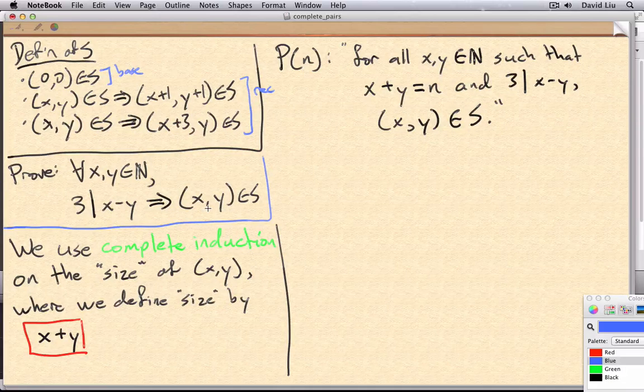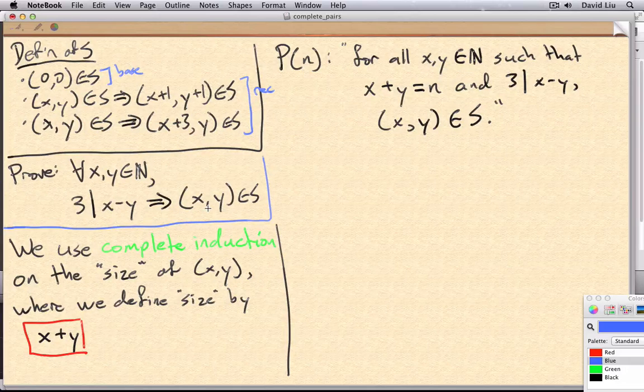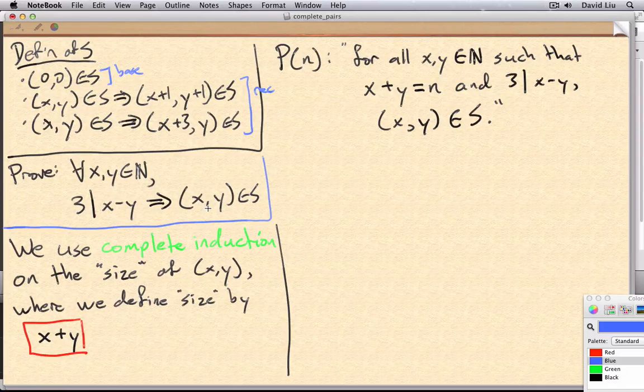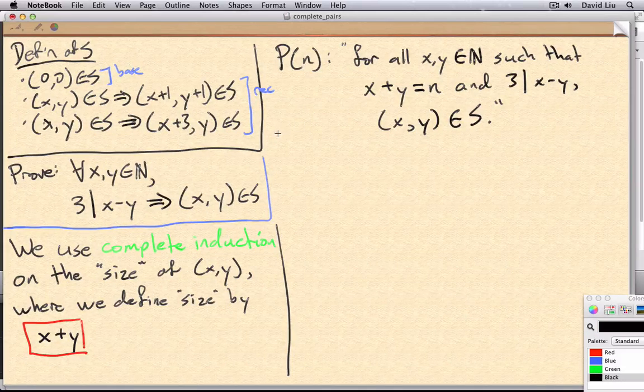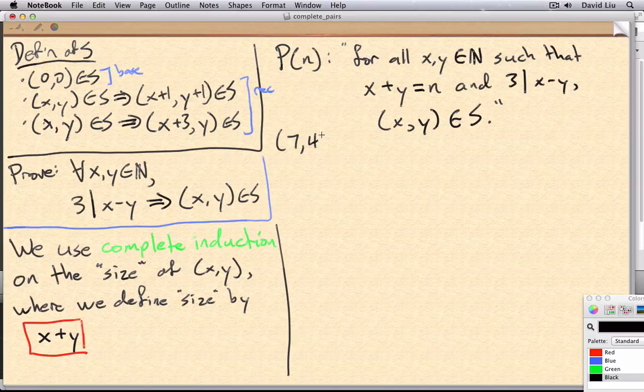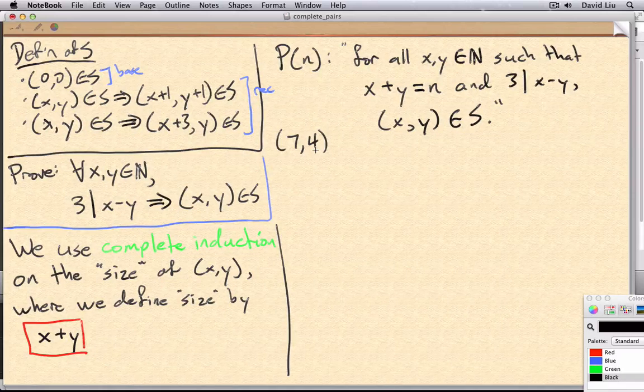In class we developed this inductive type idea of working backwards from x,y. So as an aside, if we considered the pair 7,4, 3 certainly divides their difference.